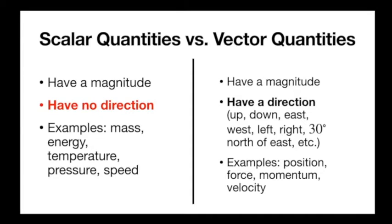Vector quantities have not only a magnitude, an amount, but also a direction. Not every scalar has a vector analog — like speed has velocity. There's no directional temperature or anything like that, so only some things make sense in both contexts. Vectors that we use a lot: positions — if I tell you something is 4 meters away, I want to tell you in what direction. Same thing with force: if I push something, what direction did I push it? As long as we have magnitude and direction, it's a vector.